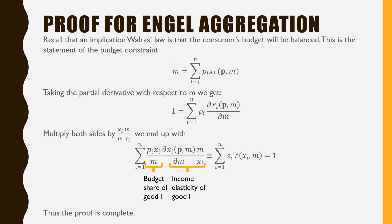So the proof for Engel aggregation is the following. Recall an implication of Walras's Law is that the consumer's budget will be balanced — this statement is that of the budget constraint. Taking the partial derivatives with respect to m of this budget constraint, we get 1 is equal to the summation of all the prices of good i, where i goes from 1 to n, times the partial derivative of their respective Marshallian demands with respect to income.